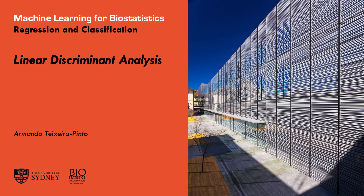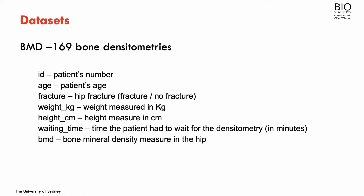We will continue with the classification methods and now we'll be talking about linear discriminant analysis. We're going to use the bone mineral density data set that includes 169 patients. The objective is going to be to predict the variable fracture — hip fracture — based on other covariates.